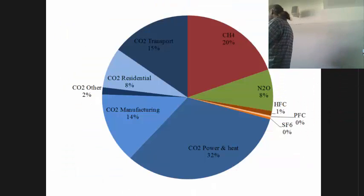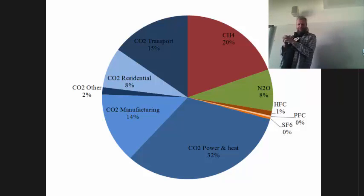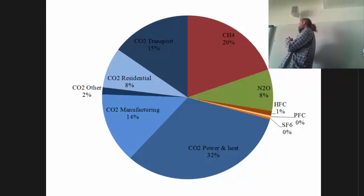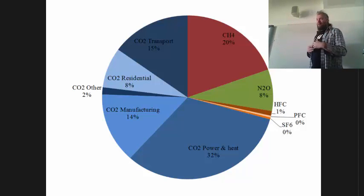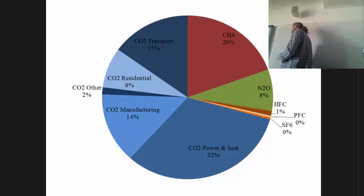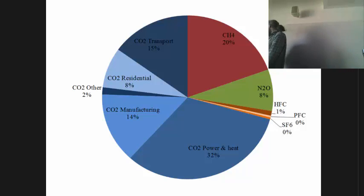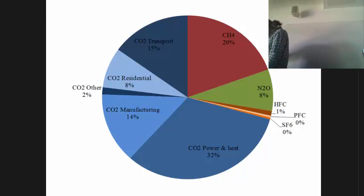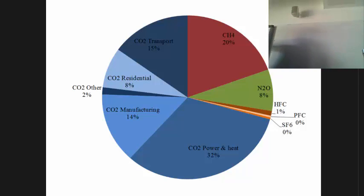These are total greenhouse gas emissions in the world in 2005. In blue you're looking at CO2 — it's by far the biggest source. Methane is about 20%. HFCs, PFCs, and SF6 are smaller, but the big bulk of emissions come from CO2.